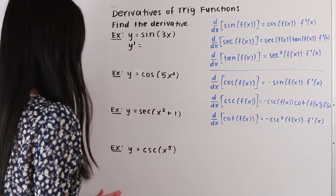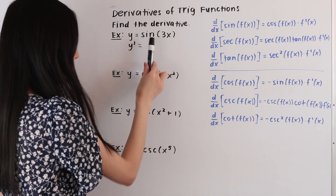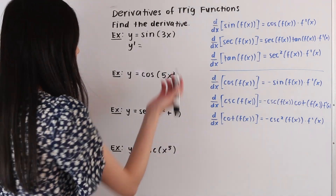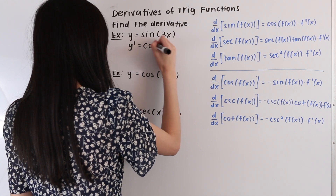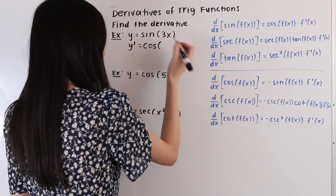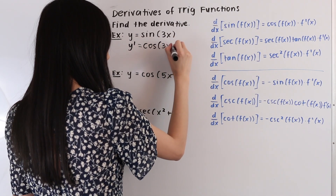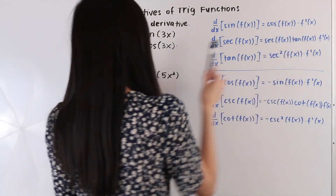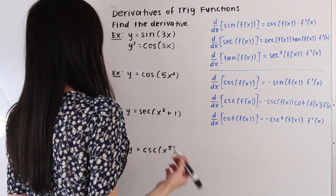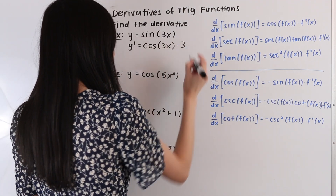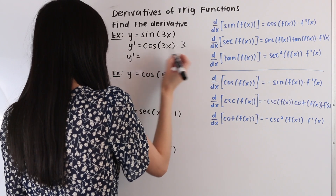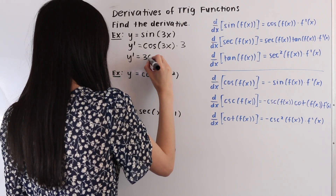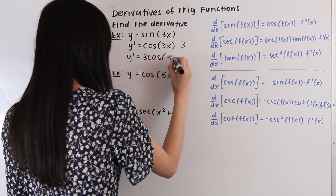So the first thing that we need to do is take the derivative of this trigonometric part, keeping the angle the same. So the derivative of sine is cosine. So we have cosine, and then we're going to keep the angle the same, so we have 3x, and then we're going to multiply by the derivative of our angle. So the derivative of 3x is equal to 3. And as our last step, we're going to move this 3 out in front. So we have y prime is equal to 3 cosine of 3x.